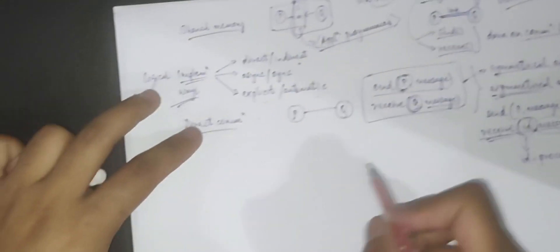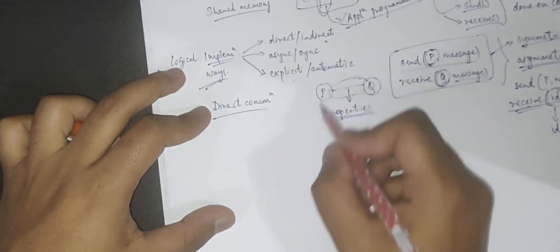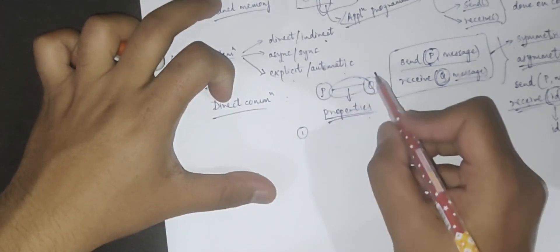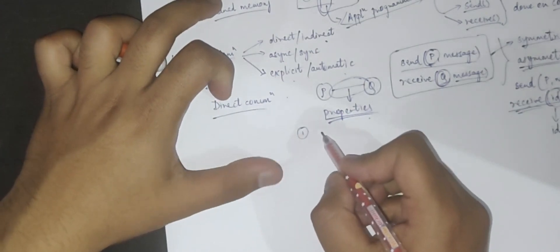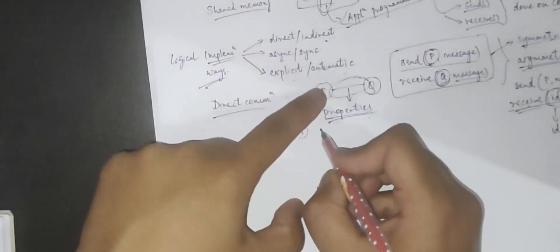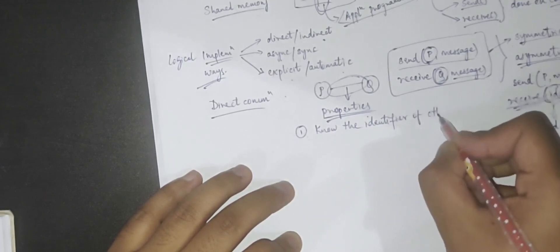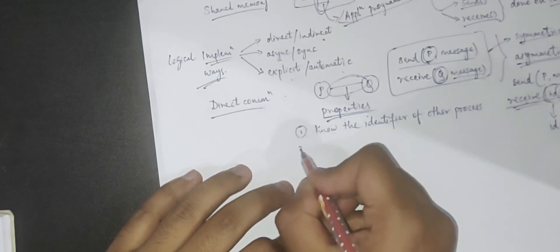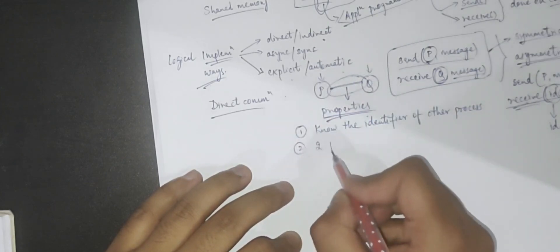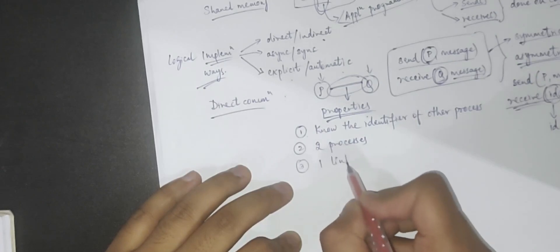Now let's talk about the properties of a direct communication link. First, every process involved in a direct communication link must know the identifier of the other process. Second, one communication link is associated with exactly two processes. Third, between any two processes there will be only one link — you cannot have more than one link between any two processes.